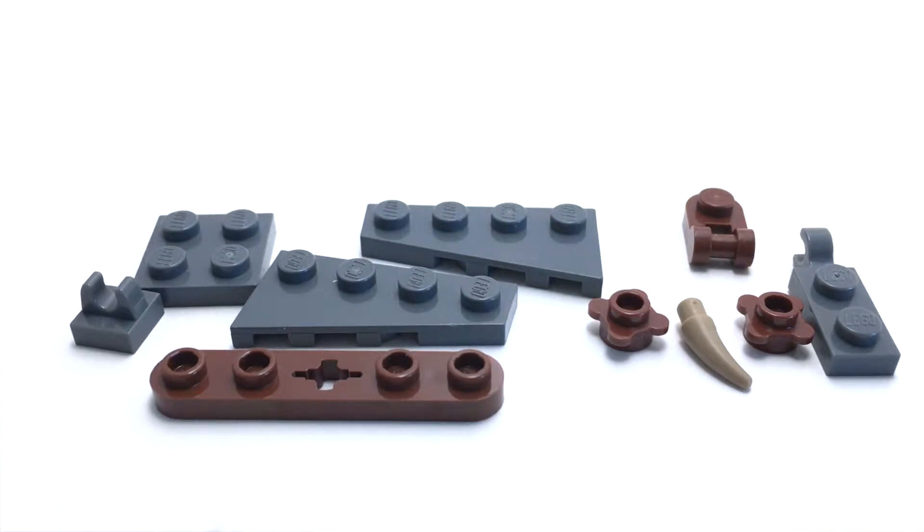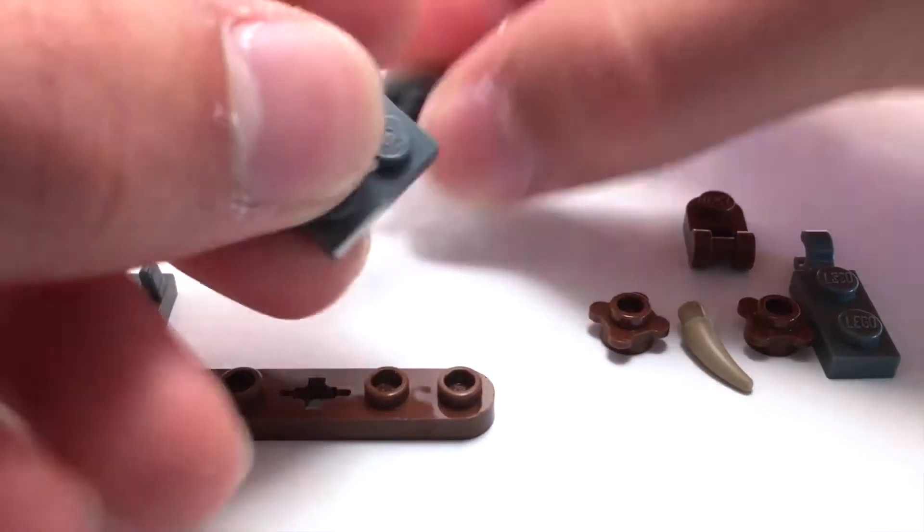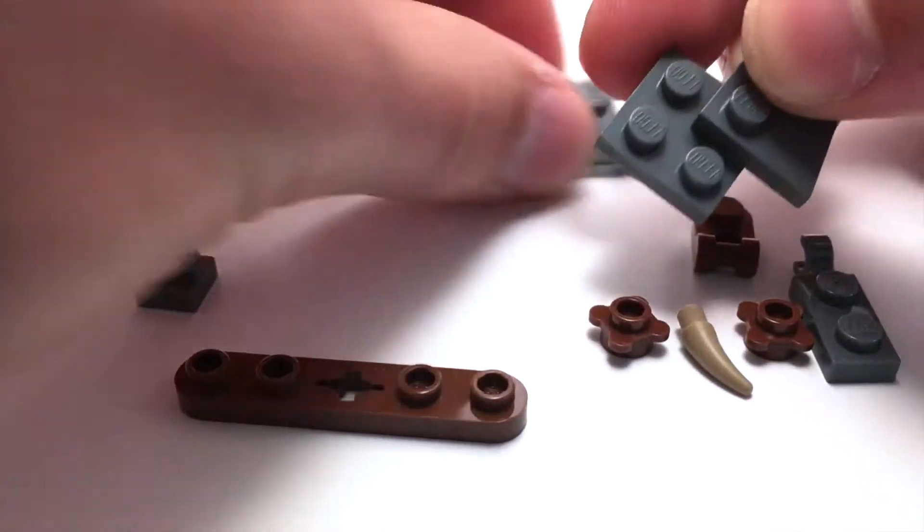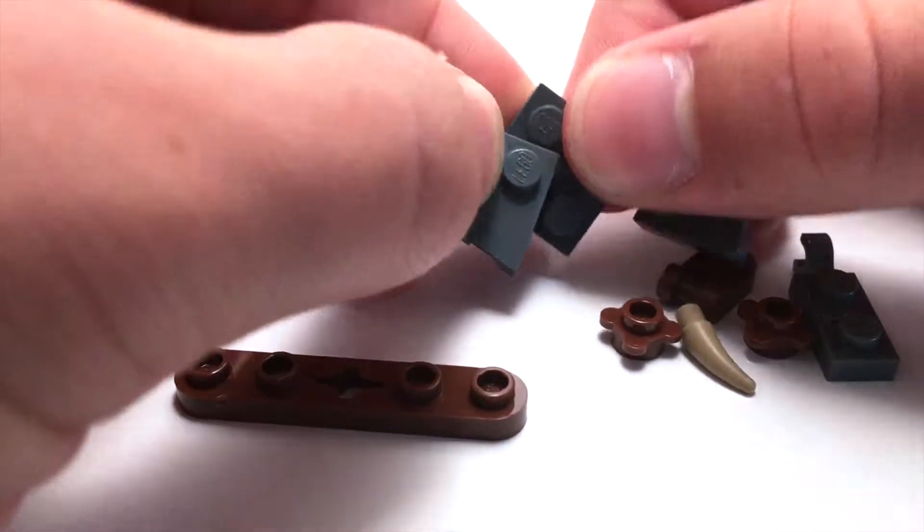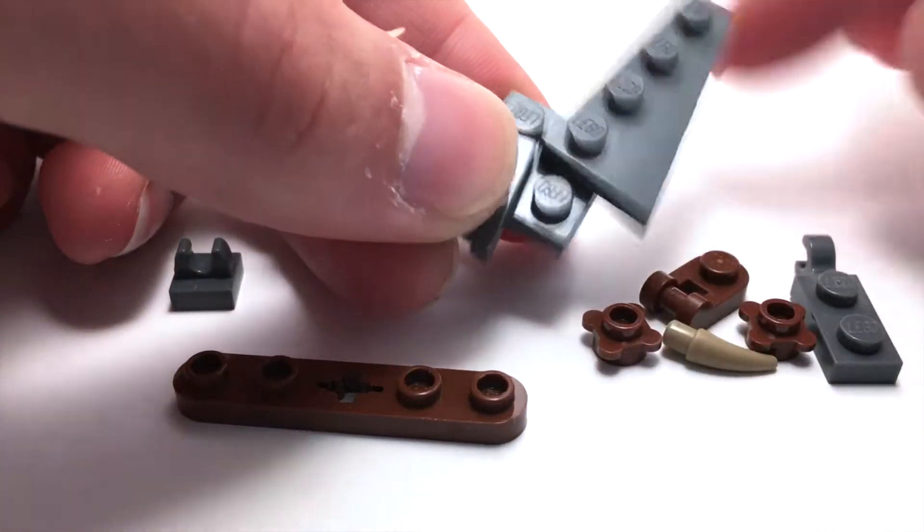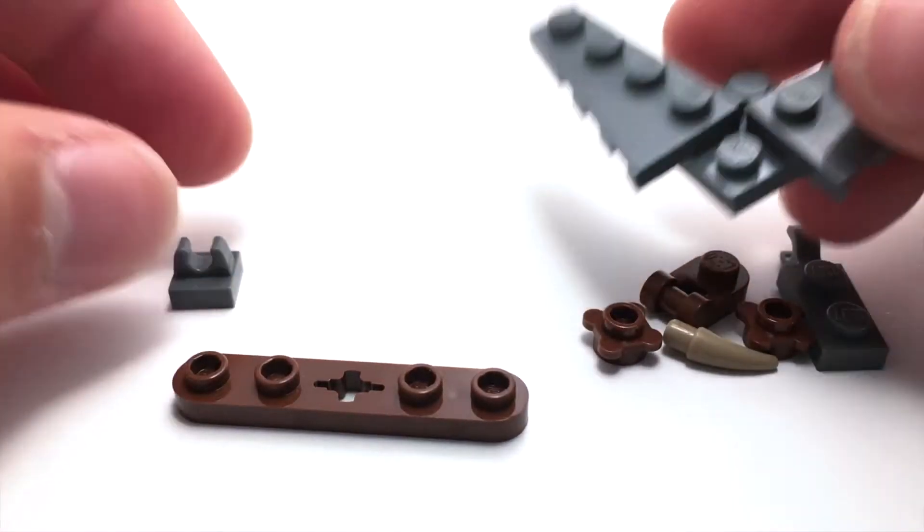Alright here is our pterodactyl, let's go ahead and build this up and check it out. So this is all built around this 2x2 dark grey and we have these dark grey sloped plates as the wings.